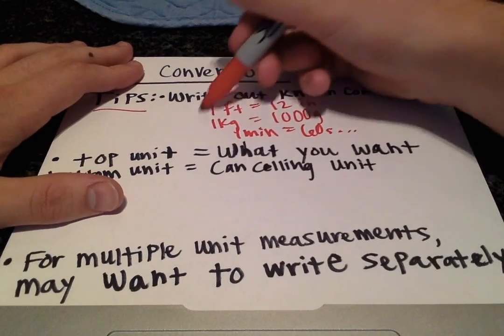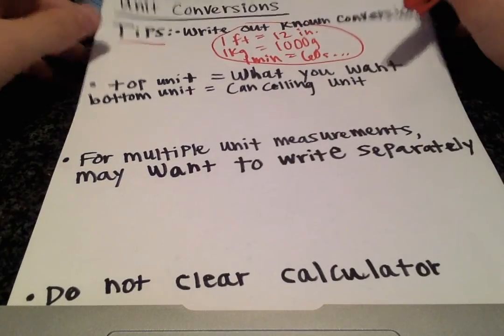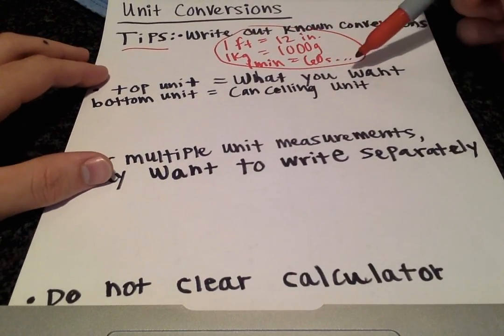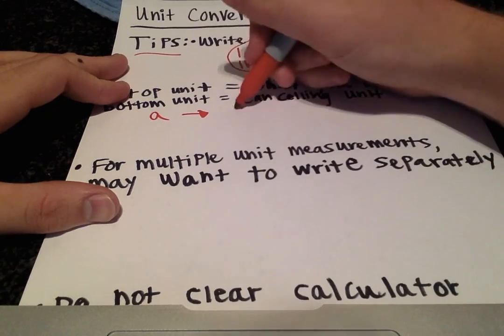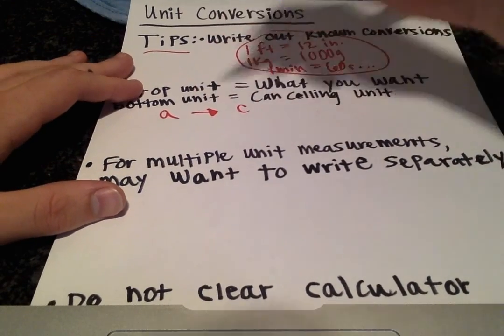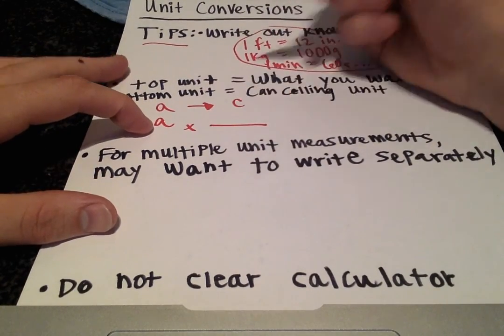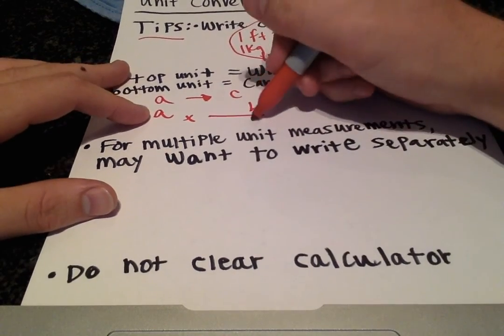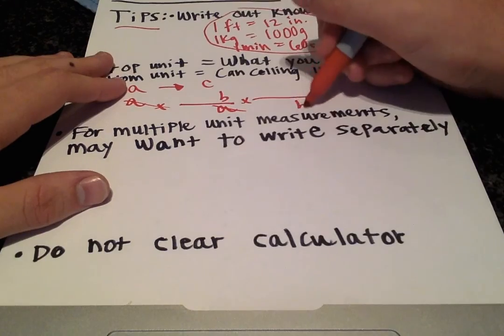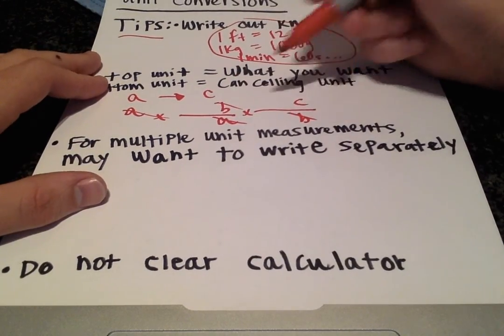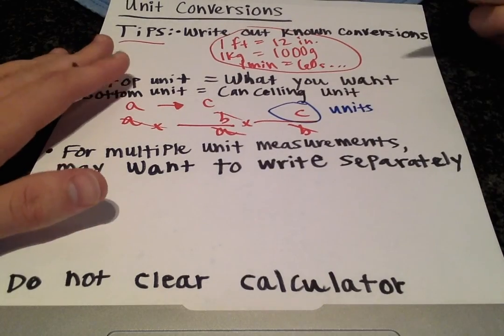Then the idea is to write out all the conversions you'll need and then do the dimensional analysis in the problem. The next tip I have is that the top unit is what you want and the bottom unit is what you're going to be canceling out. So let's just say you're going from unit A to unit C. You're going to multiply A by a conversion factor and you're going to want to put our next unit, let's say it's B, and the bottom unit in the denominator is going to be the previous unit and they're going to cancel out. Doing that again, put B in the denominator, the new unit on top, and they'll cancel out, and we'll get in the numerator the units we want.